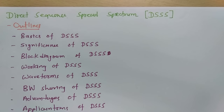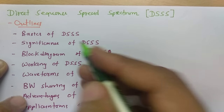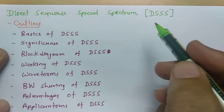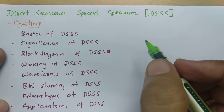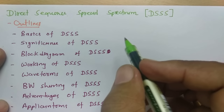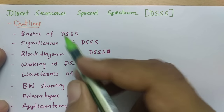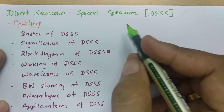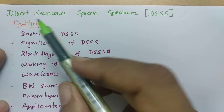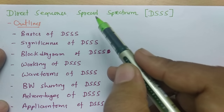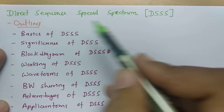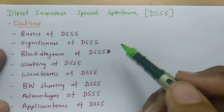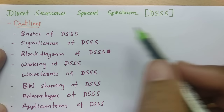Welcome to Digital Communication Playlist. In this session, I will be explaining Direct Sequence Spread Spectrum. I will continue from my previous session where I explained Frequency Hopping Spread Spectrum, which was an analog technique of spread spectrum. Now in this session, I will explain Direct Sequence Spread Spectrum, which is a digital spreading technique of spectrum.